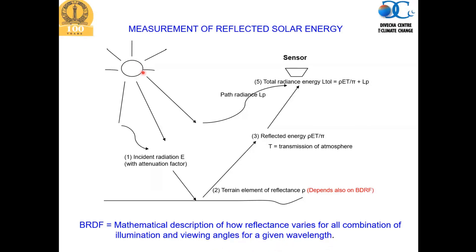There is also the Bidirectional Reflectance Distribution Function (BRDF) — a mathematical description of how reflectance varies for all combinations of illumination and viewing angles for a given land surface. As seasons change, the sun's position changes. Even though a satellite may observe at a fixed local time (sun-synchronous orbit), the sun's position varies with season. Additionally, terrain is not uniform — slope angle and orientation will change the incident angle, affecting the measured reflectance.